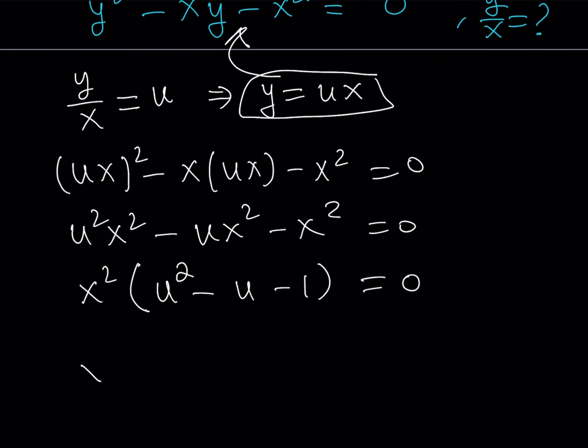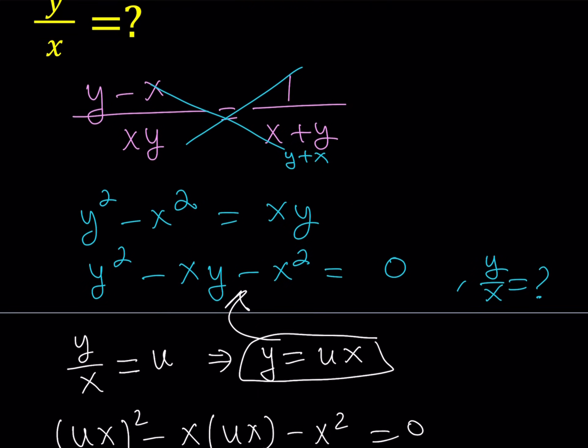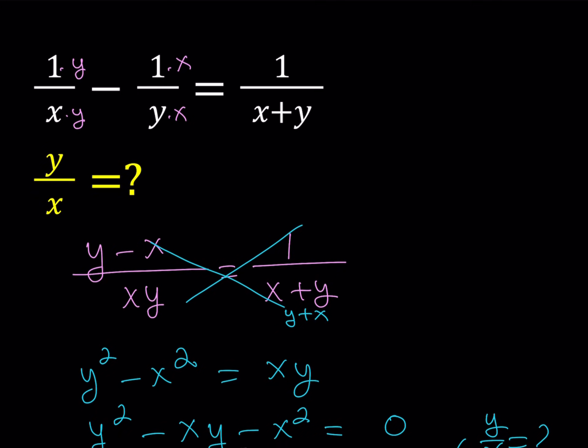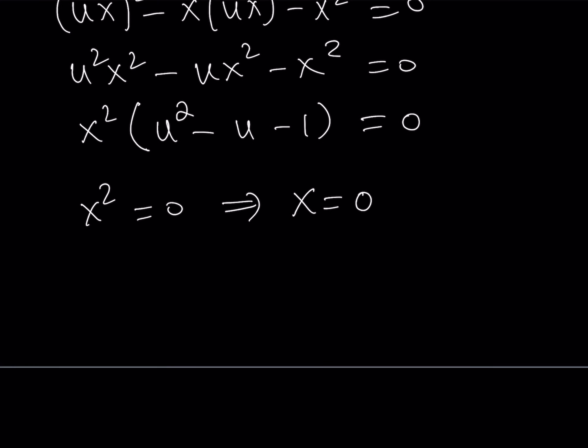Either x squared equals 0 or u squared minus u minus 1 equals 0. Now, what does this imply? If x squared equals 0, then x needs to be 0. Is that possible? Let's take a look. Look at the original problem. You see that x cannot equal 0. Maybe I should say that at the beginning. My bad. Y should not equal 0. And x plus y should not equal 0. Those are all not allowed. So, that is not possible.